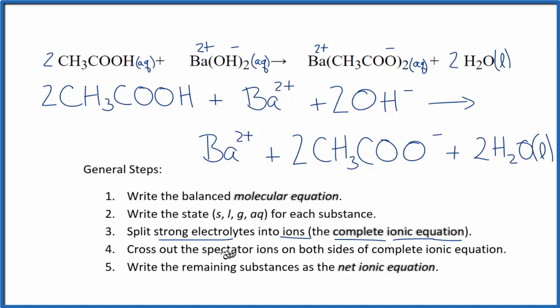Now we can cross out what are called spectator ions. They are on both sides of this complete ionic equation. So I can see I have a Ba2+ here in the reactants, and in the products I have a Ba2+. I can cross that out. Everything else is different though. This CH3COOH, acetic acid, that's different than the CH3COO-, the acetate ion. And the hydroxide is different than water, so we can't do anything with those.